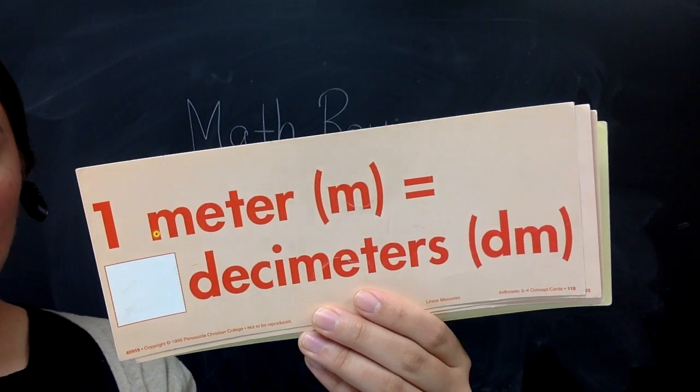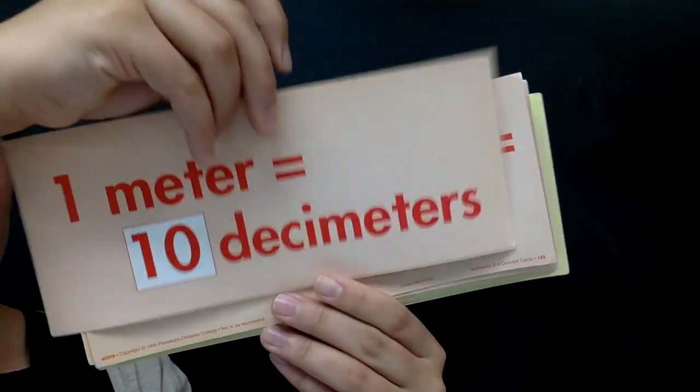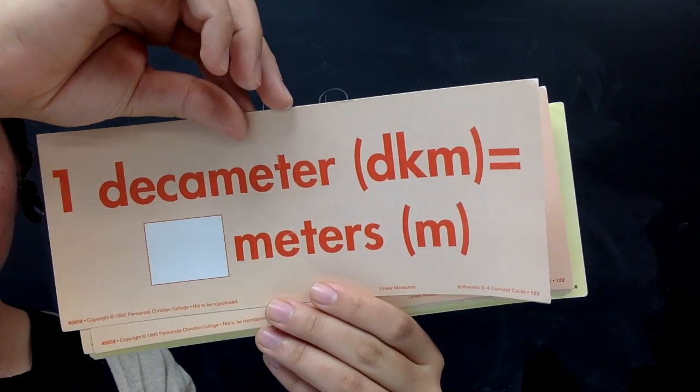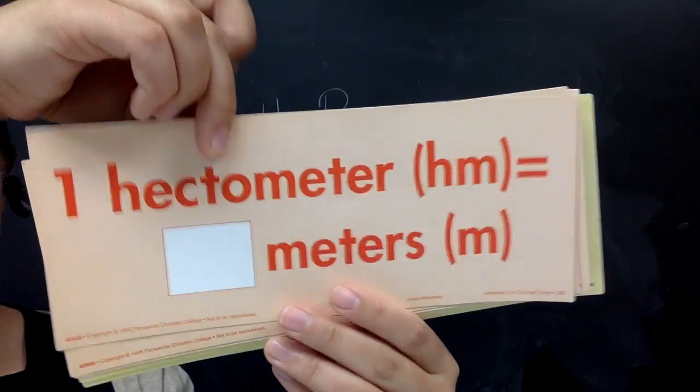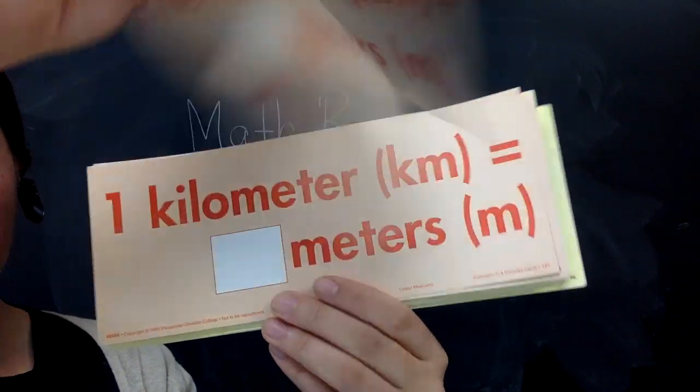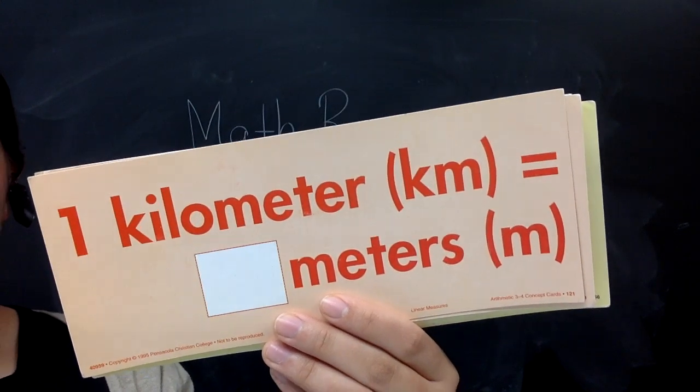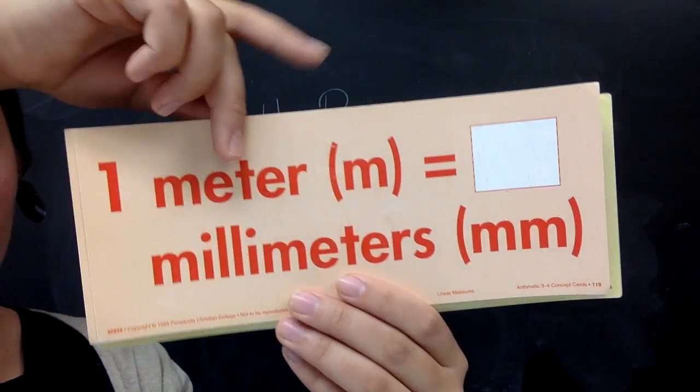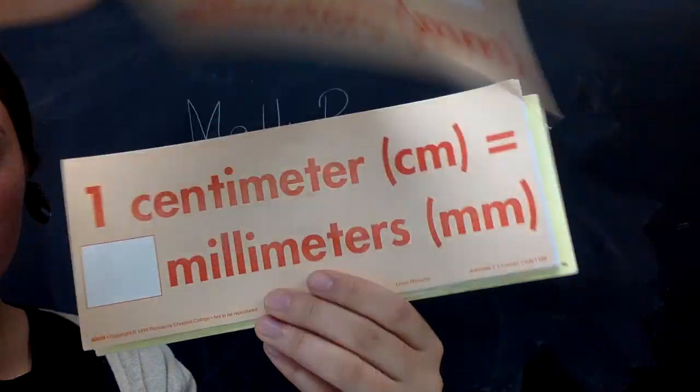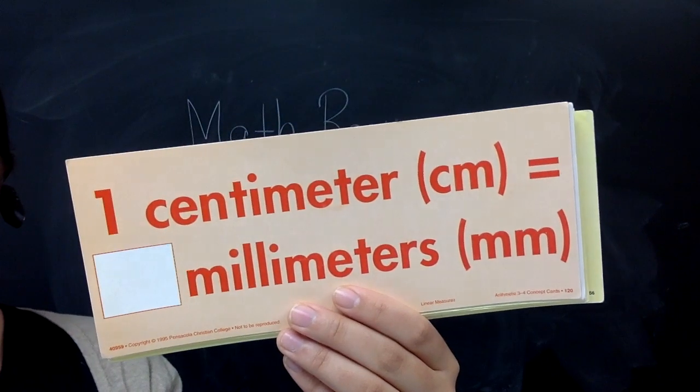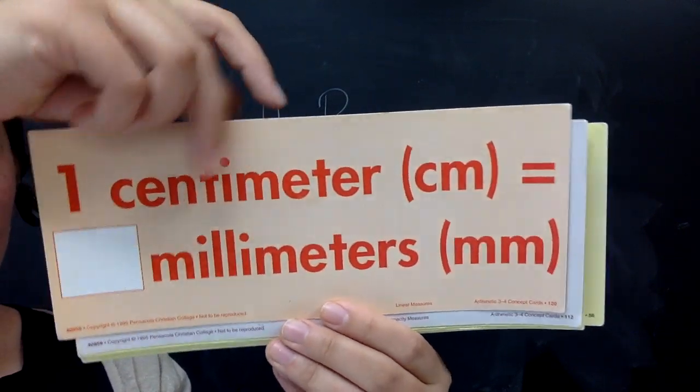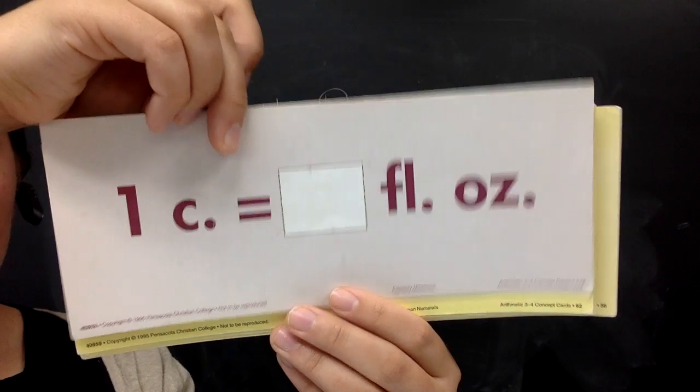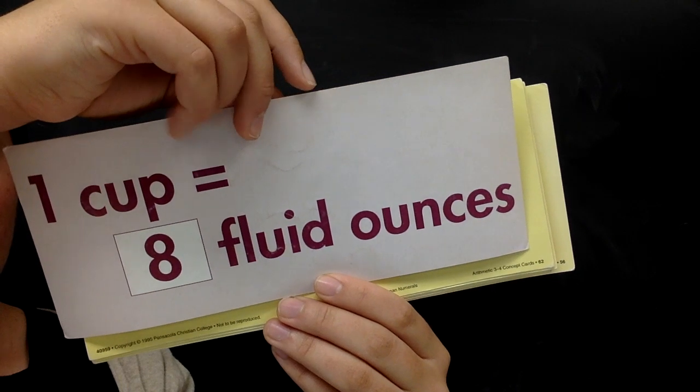One meter equals how many decimeters? 10. One hectometer equals how many meters? 100. One cup equals how many fluid ounces? 8.